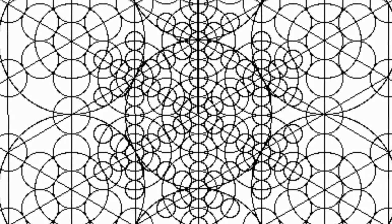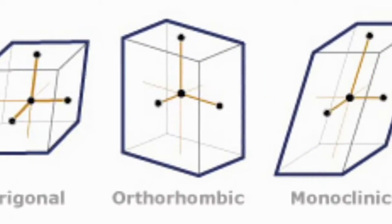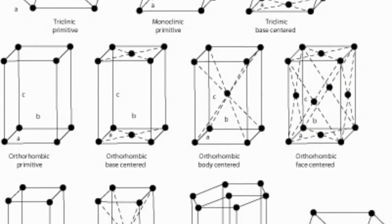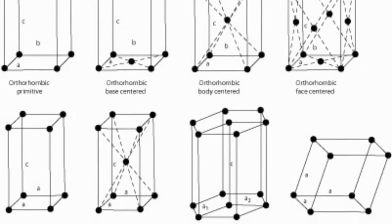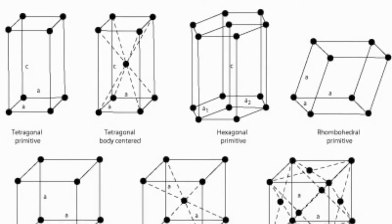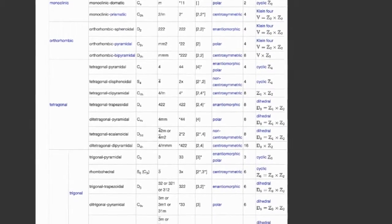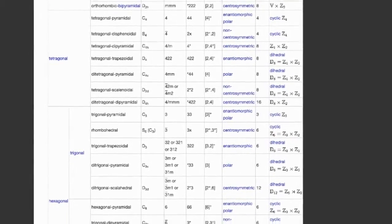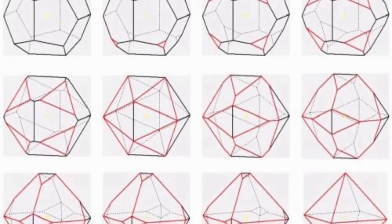In total, there are seven crystal systems, which include triclinic, monoclinic, orthorhombic, tetragonal, trigonal, hexagonal and cubic. Within the seven main crystal systems, there are 32 classes, which are basically more varied or uniquely structured crystals which contain a different geometry.